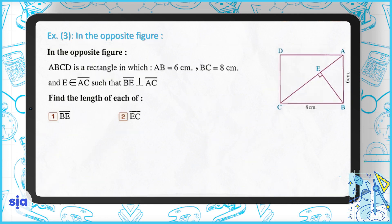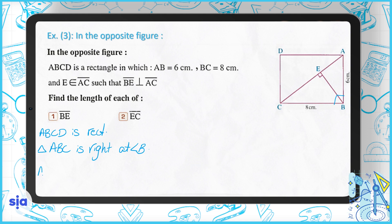Exercise number three: find the lengths of BE and AC. Since ABCD is a rectangle, angle B is 90°, so triangle ABC is a right triangle at B. By the Pythagorean theorem, AC = √(6² + 8²) = √(36 + 64) = √100 = 10 centimeters.